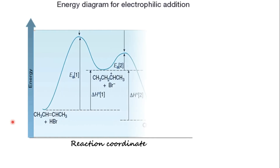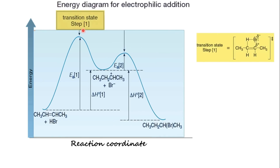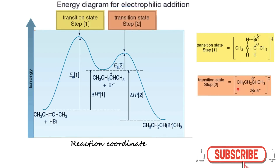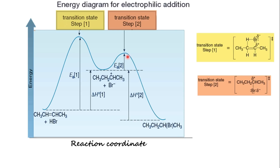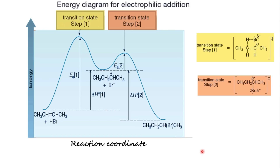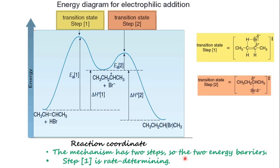We can show these reaction steps in the energy diagram. This is a two-step reaction and each step has its own energy barrier and a transition state at energy maximum. Step 1 has a higher energy transition state, therefore it is the rate-determining step. Step 2 has a lower energy transition state. The activation energy for step 1 is higher than for step 2. The enthalpy for step 1 is positive because two bonds are broken and only one is formed, while the enthalpy for step 2 is negative because only bond-making occurs.